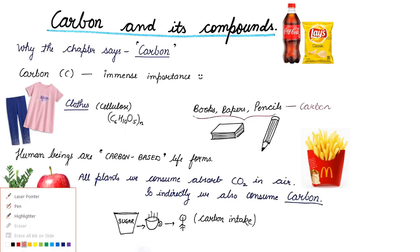But before I start with the topic, don't you think why a particular chapter was specifically named Carbon? Like, why not they gave you a chapter whose name was Oxygen and its compounds, Nitrogen and its compounds, Chlorine and its compounds? Why only Carbon? Why is it so special?